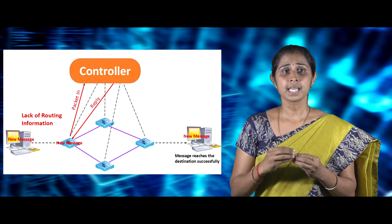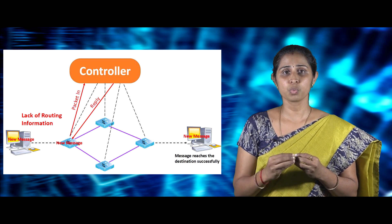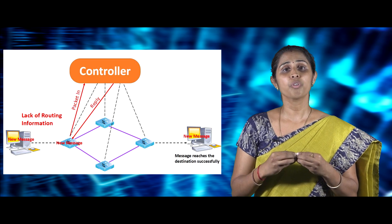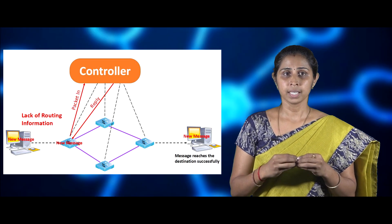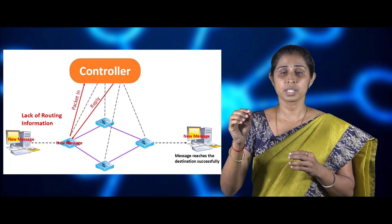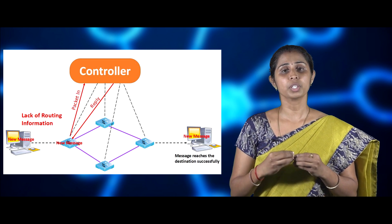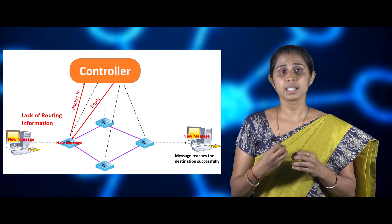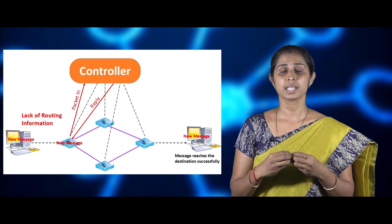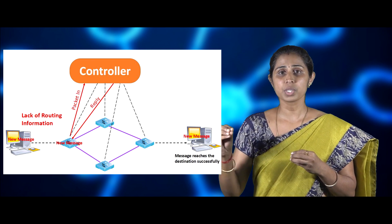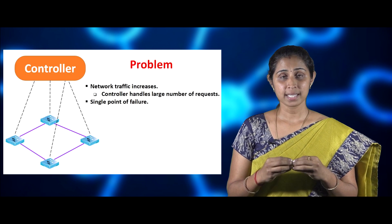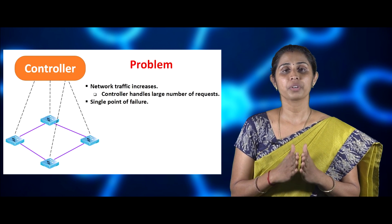When the source host sends a new packet to switch S1, the switch cannot achieve the forwarding function due to the lack of routing information for the new packet. Then switch S1 sends packet-in messages to controller C1 to get the routing for the new packet. After getting the response message from the controller, the switch forwards the packet to the next device. Finally, the packet reaches the destination host successfully. Here the controller plays a major role in the process of traffic transmission.